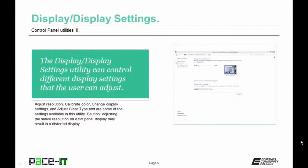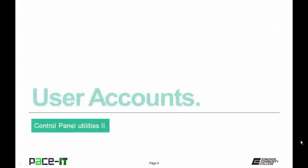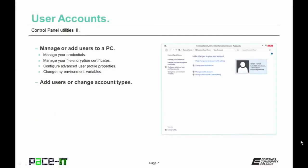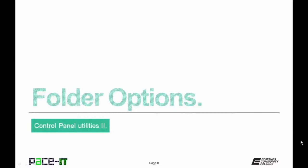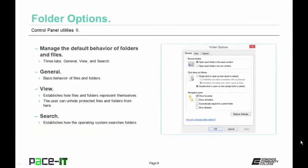The User Accounts utility is used to manage or add users to a PC. You can manage credentials, manage file encryption certificates, configure advanced user profiles and properties, or change environmental variables for the system. The Folders Options utility is of special importance to a technician — from here you can manage the default behavior of folders and files. There are three tabs: General, View, and Search.